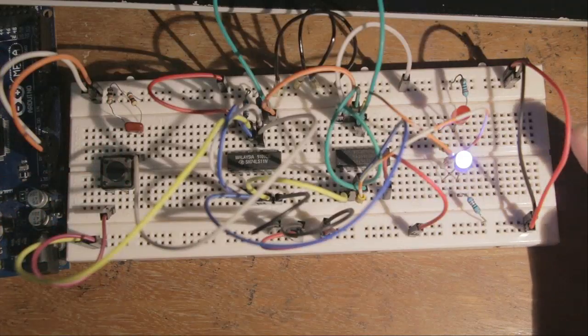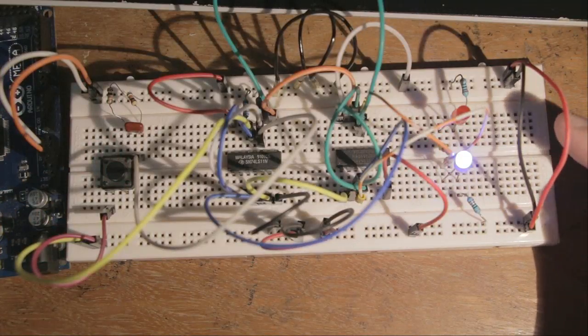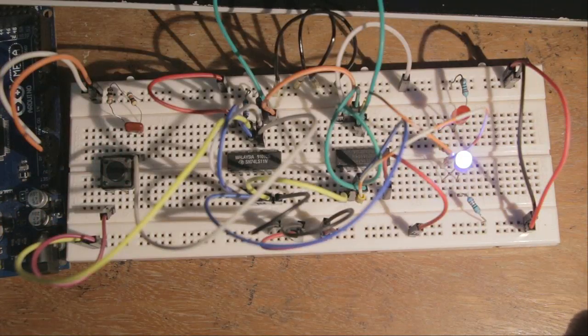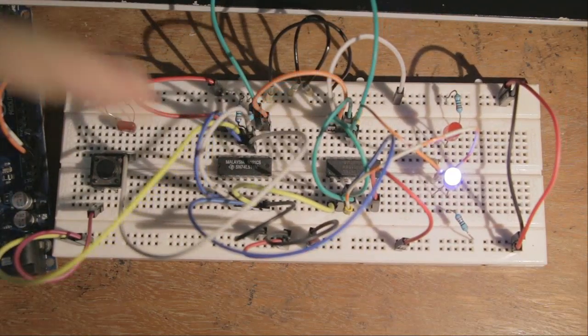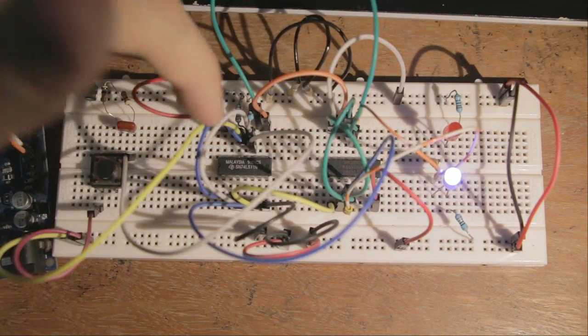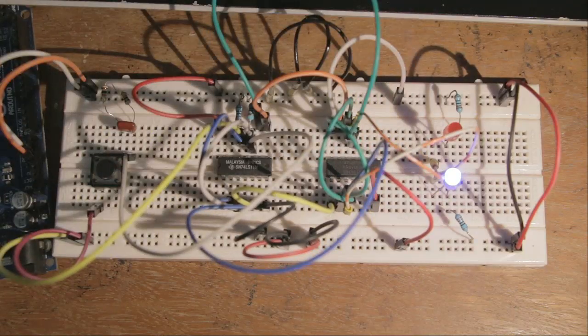Every press of the button is going to allow the state to transition from one to the other. And there you go, that's essentially this circuit in a nutshell. Definitely very messy to look at, especially because we have two IC chips in the middle,